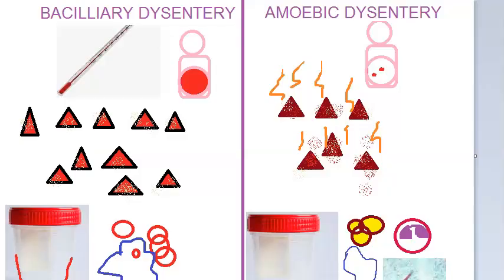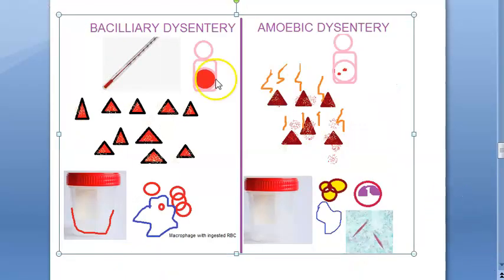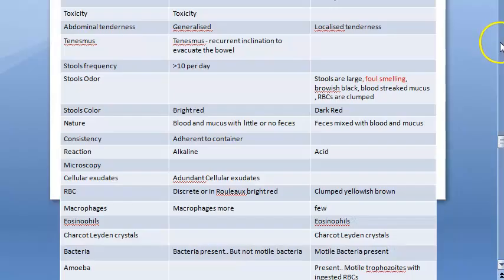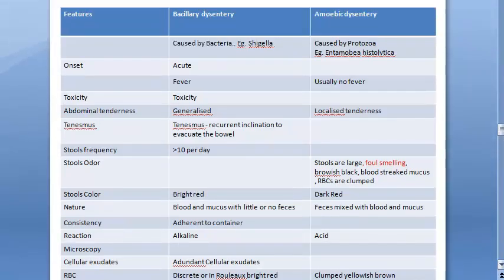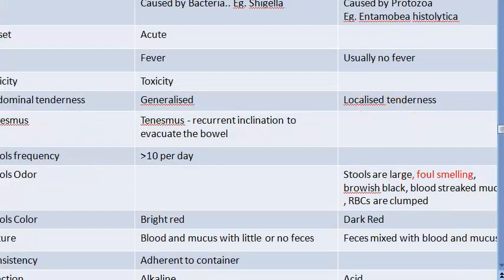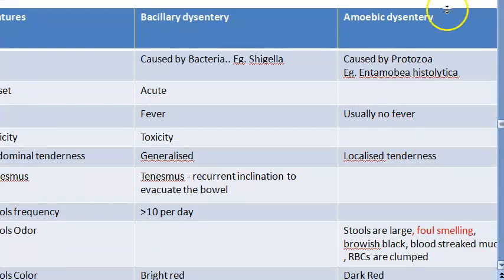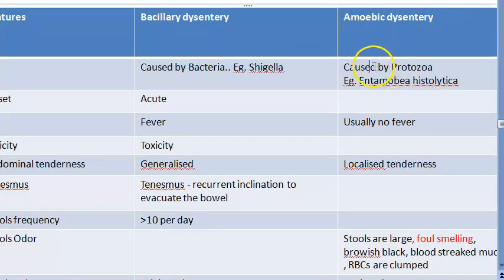In this video we want to look at the differences between bacillary dysentery and amoebic dysentery. Bacillary dysentery is caused by bacteria; amoebic dysentery is caused by Entamoeba histolytica, which is a protozoan. Look at the table we have created. Bacillary dysentery is caused by bacteria such as Shigella, and amoebic dysentery is caused by protozoa such as Entamoeba histolytica.